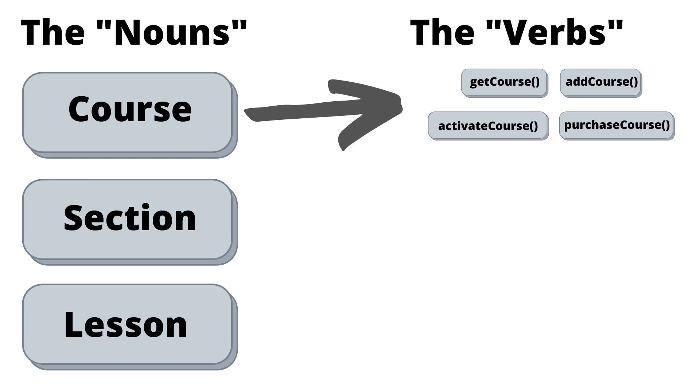Within these nouns they have different verbs or actions they can do. For a training course object, you can create a new course or add a section. Object-oriented programming is taking the real world and mapping it to our code so that we as humans can make sense of it better. With object-oriented programming comes what we call design patterns — reusable patterns that have been tested over time by many developers and are known ways to solve different coding problems.